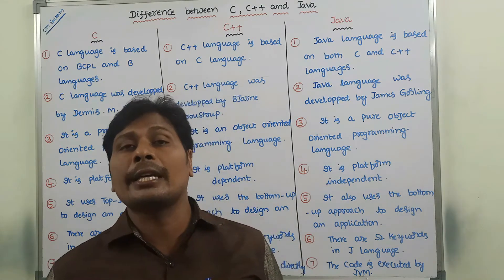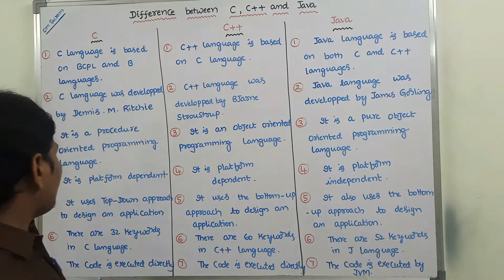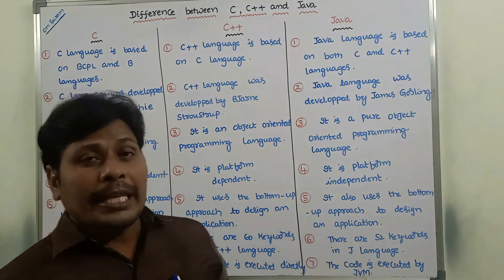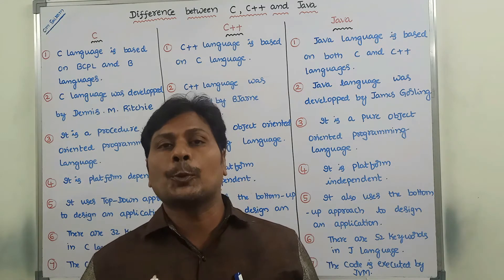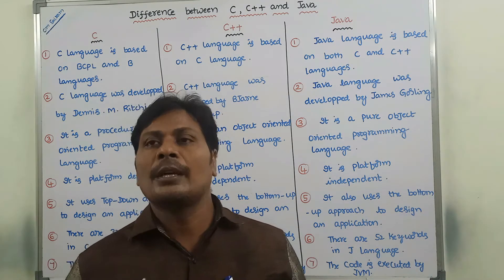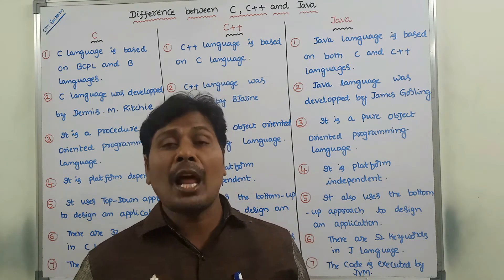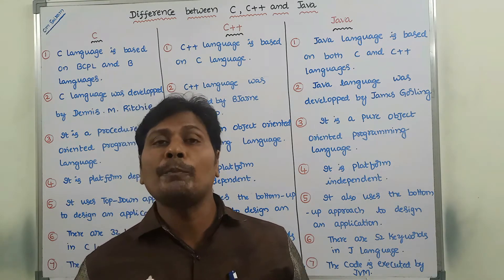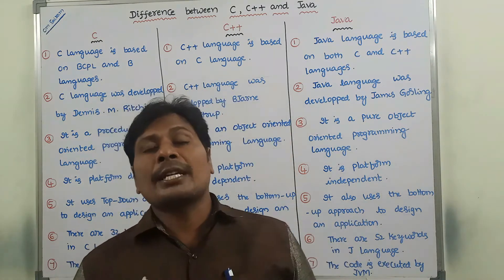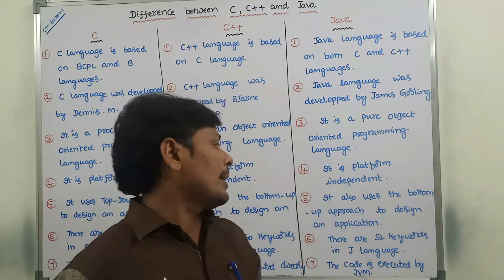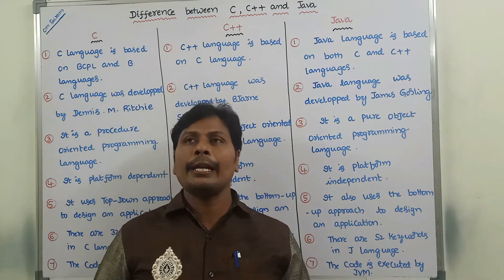C language uses a top-down approach to design an application, whereas C++ and Java use a bottom-up approach to design an application.